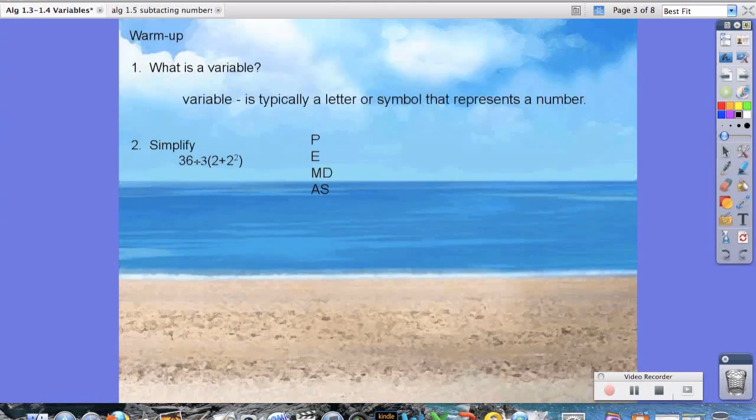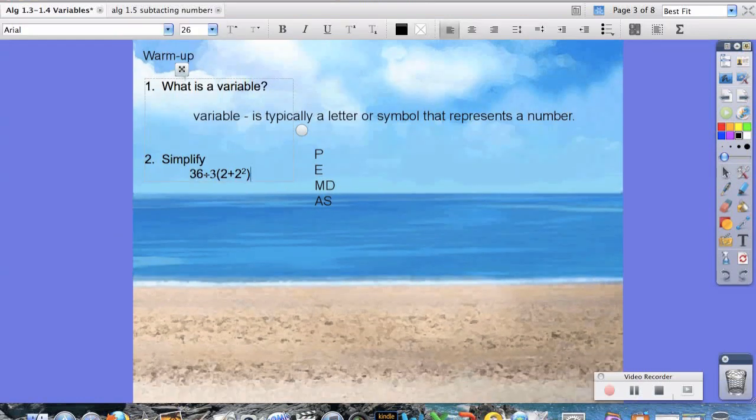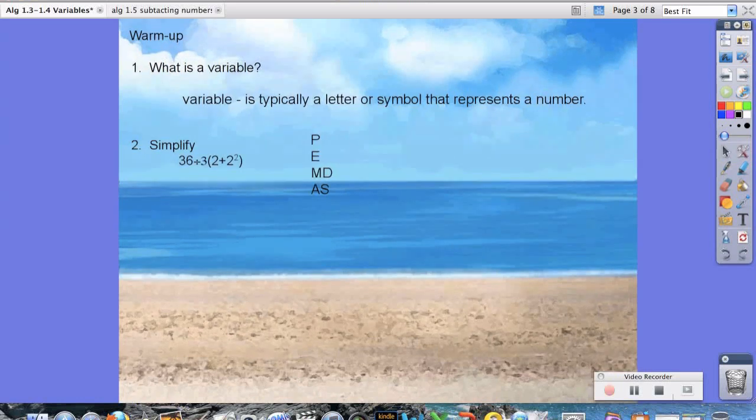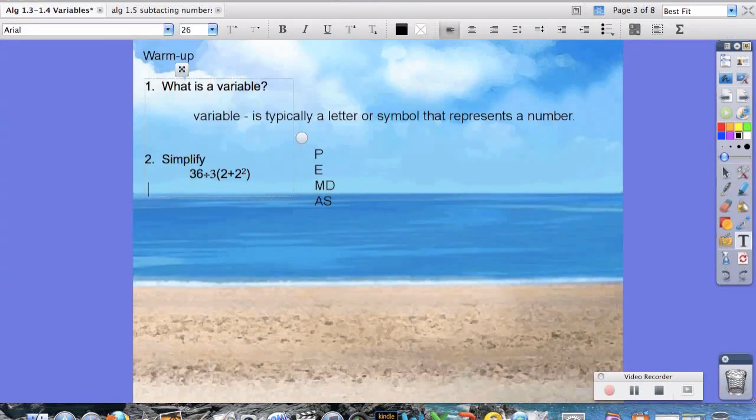And we're just going to go down the line. So parentheses, we do have these, so we're going to deal with that first. So we have 36 divided by 3, and then we're going to deal with our parentheses first. So 2 plus 2 squared, not 2 squared, it's 4. So notice how we're just simplifying the inside of the parentheses. So 2 plus 4 is 6.